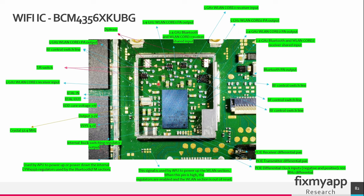On this pad you can measure the 5GHz signal for channel 1, and on this pad the 5GHz signal for channel 0. These two components are the diplexers. On this component you can measure the 2.4GHz signal for channel 1, and on this location the 2.4GHz signal for channel 0. On this pad you can measure the 5GHz signal going into this chip — this is the input side. On this pad here you can measure the 2.4GHz signal going into this chip — this is also the input side.